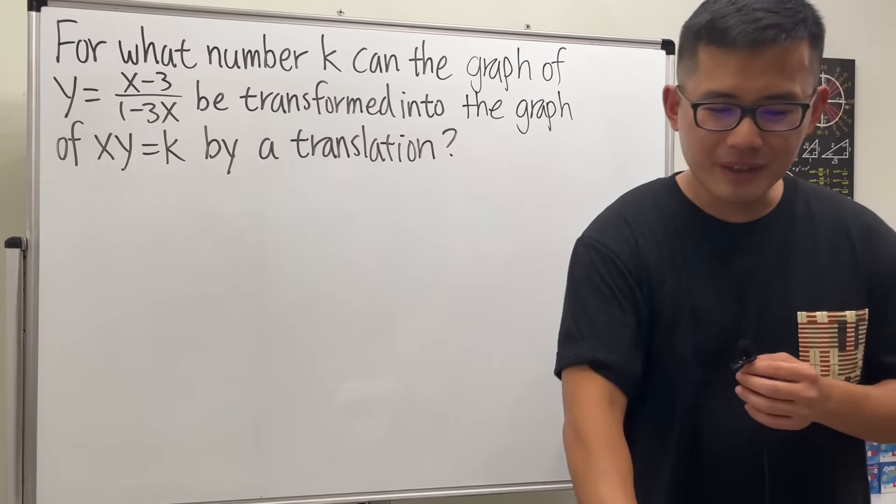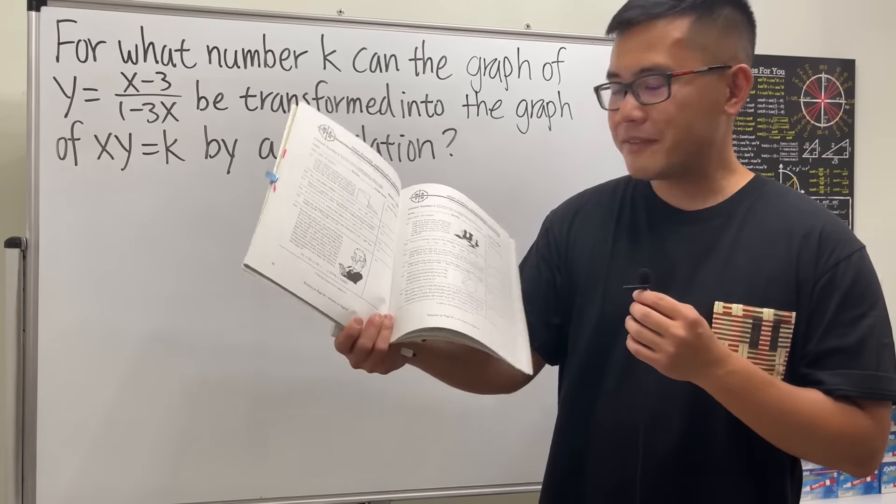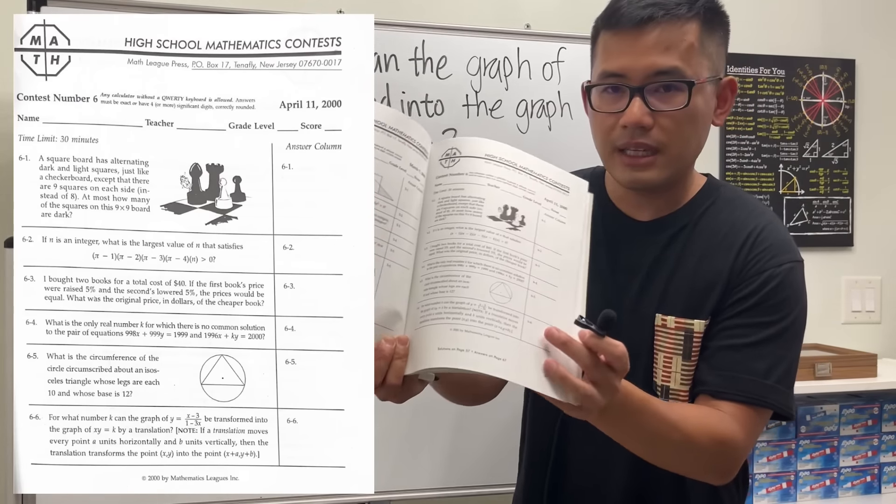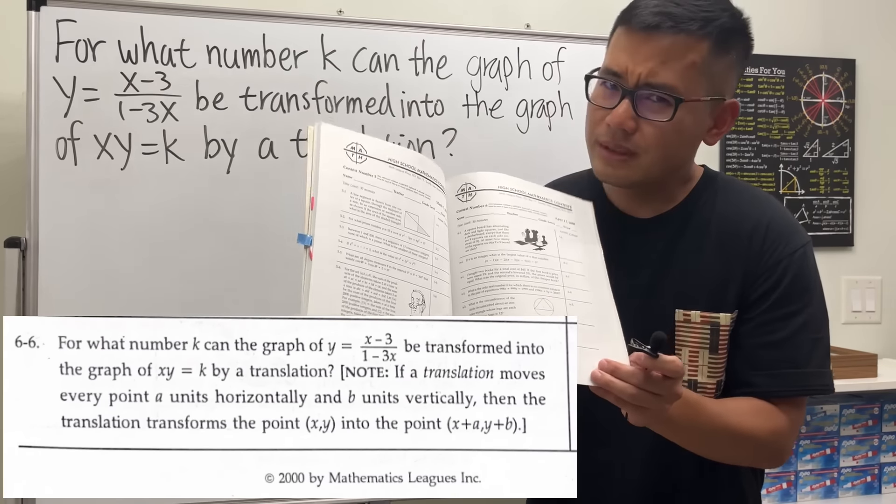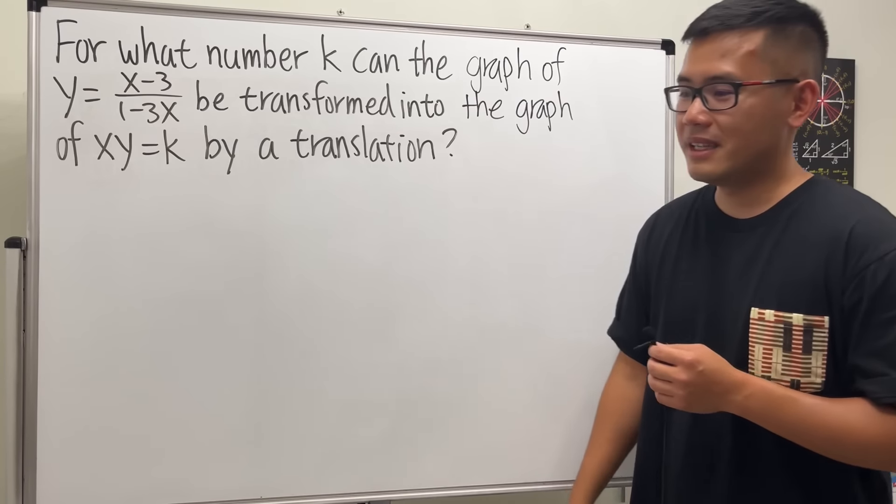And let me tell you guys that I got this question from the Math League contest. So I got it from this book, and it's a math competition for high school students. And you can see that it's actually in the year of 2000, and this is actually the last question. So it's meant to be a little bit more difficult than the other questions on the particular test.